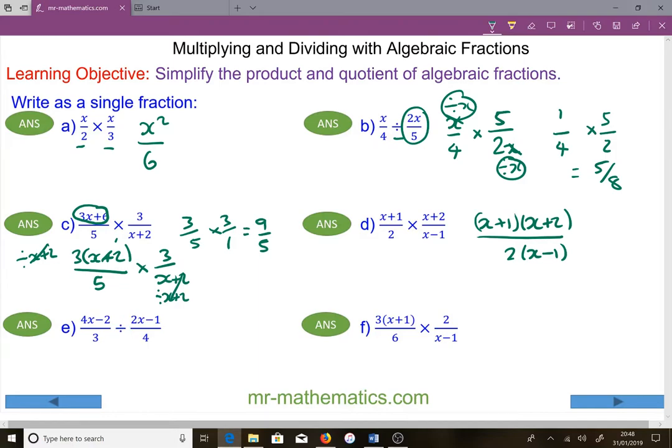For question e, we're going to fully factorize the numerator. We have 2 lots of x minus 1 over 3, multiplied by the reciprocal of this fraction, 4 over 2x minus 1. So we have 2 times x minus 1 times 4, which is 8 lots of x minus 1, over 3 lots of 2x minus 1, which is 6x minus 3.